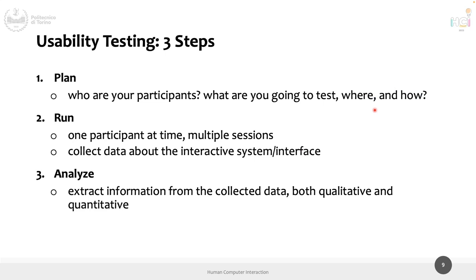To run a usability test you have three main steps. The first - longest and most complicated - is planning: who are the participants, which tasks will you test, where will you do the test, how will you test, and which measures will you collect. Once you have the plan, you move to the second step: actually running the test - calling one participant at a time across multiple sessions. Then at the end, with data collected from all sessions, you analyze the information - both qualitative and quantitative.